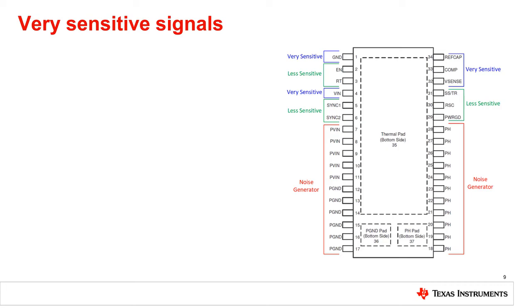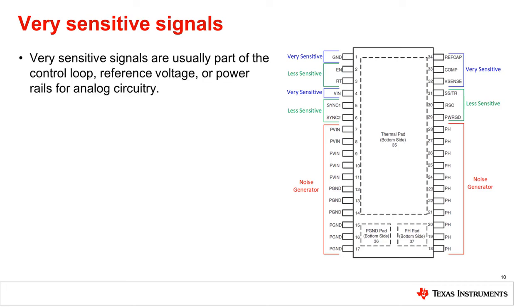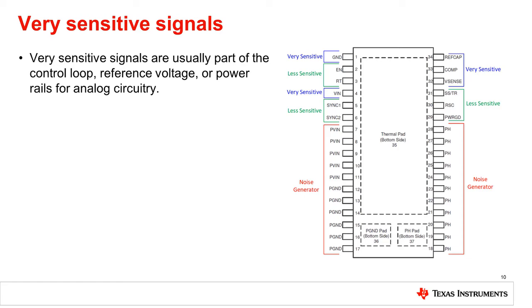There are of course very sensitive signals that are either part of the control loop, the reference voltage, or provide power for the analog circuitry that are labeled on the right. Very sensitive signals should be as short as possible, and stay away from noise generators, or any other noisy signals that may come from other parts of the board.